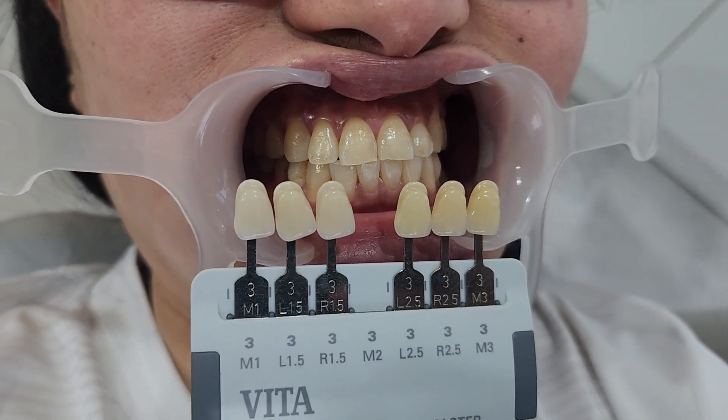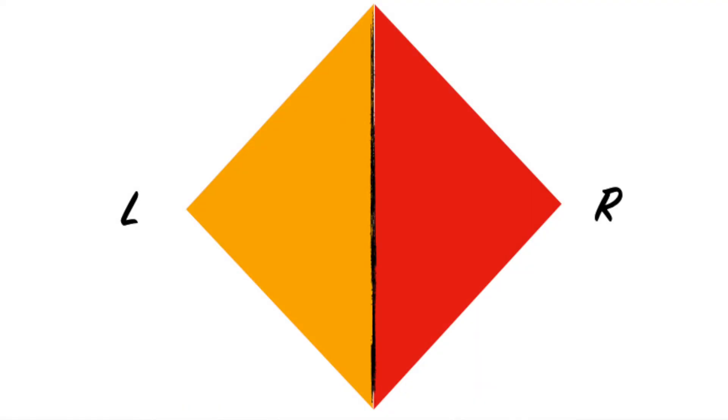Once we have decided the value, this is what comes into the picture. The guide is divided into L columns, R columns, and M columns. The more R is the more reddish shade, the more L is the more yellowish shade, and M is the medium shade between yellow and red. Once the value is confirmed — say value 2 — you decide whether the tooth falls under L (more yellow), R (more red), or M (medium). You can then take those specific tabs from the box to find the exact shade that matches the patient.